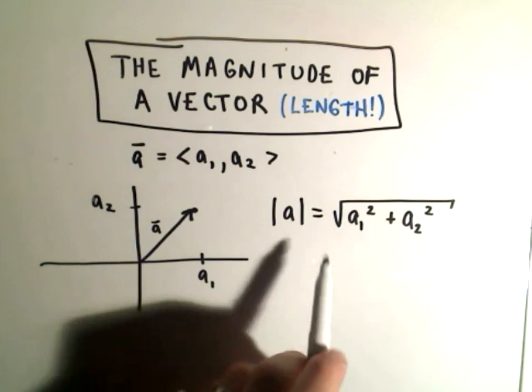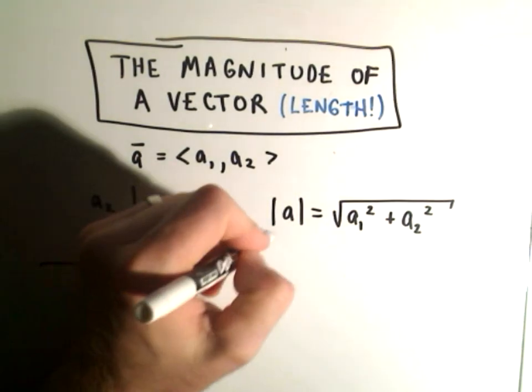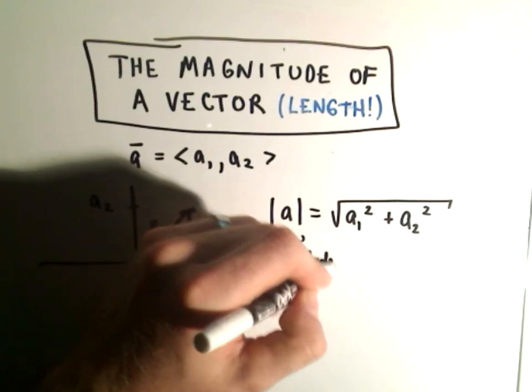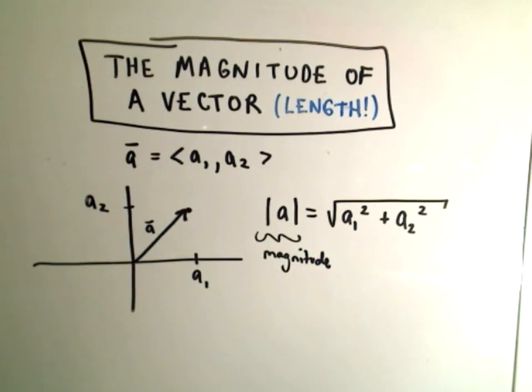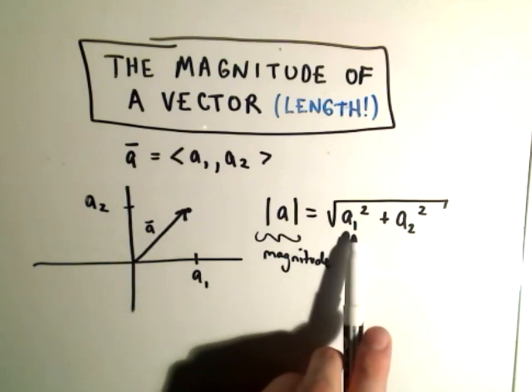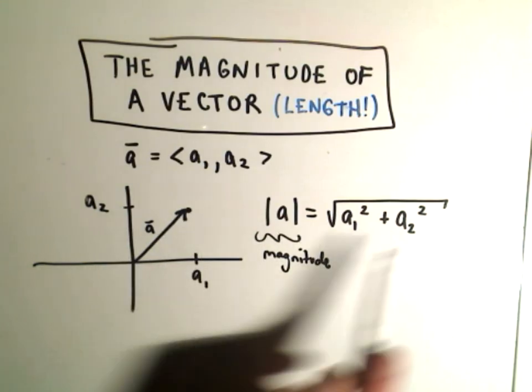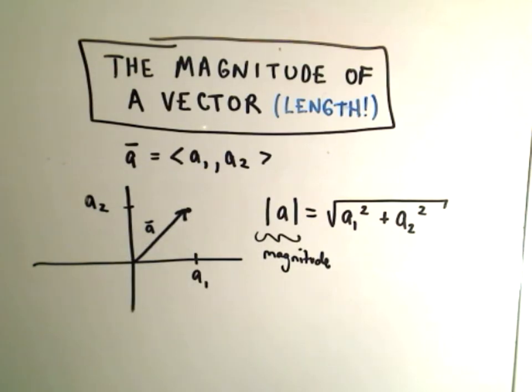We can get the length or magnitude - this is the notation for magnitude. We put it in little absolute value bars. Basically, you're using the Pythagorean theorem. Here we would take A1 minus 0 squared plus A2 minus 0 squared.